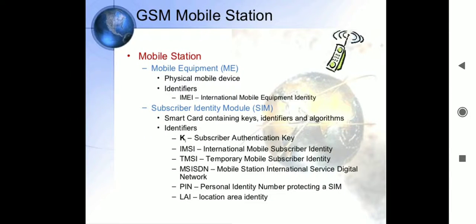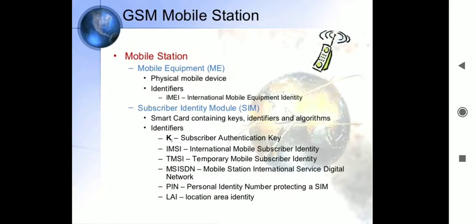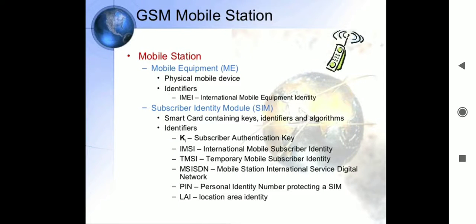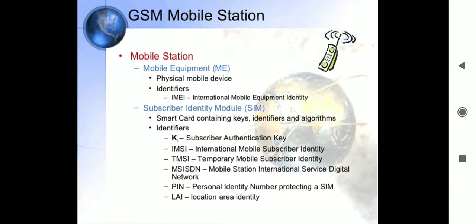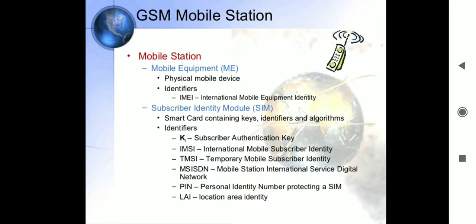The GSM — Global System for Mobile Communication — is one of the most popular mobile communication standards. It uses cellular networks and is a second generation (2G) cellular mobile radio system standard that was developed to solve the fragmentation problems of the first cellular systems. GSM is a globally accepted standard for digital cellular communication.